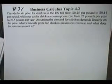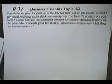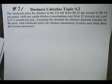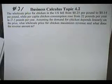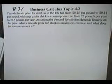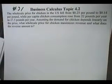Number 31. The wholesale price for chicken in the U.S. fell from $0.25 per pound to $0.14 per pound. While per capita chicken consumption rose from 22 pounds per year to 27.5 pounds per year. Now, assuming the demand for chicken depends linearly on the price, what wholesale price for chicken maximizes the revenue? And also, what does that revenue amount to?